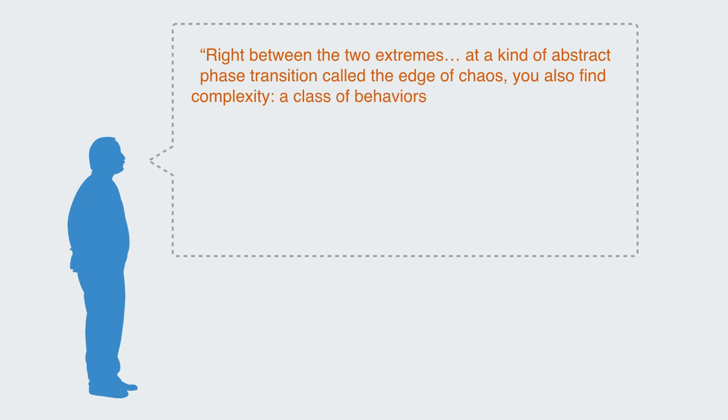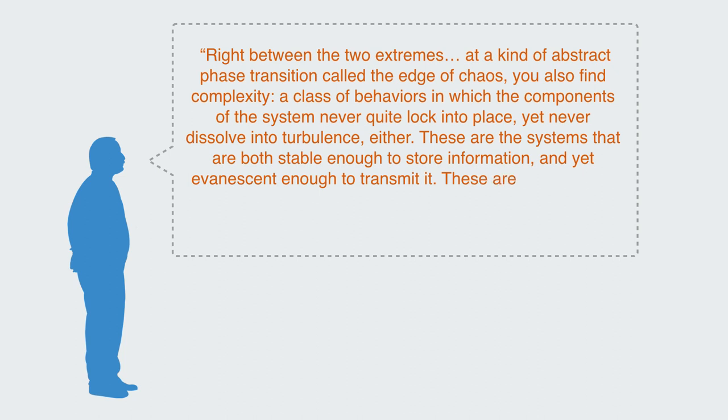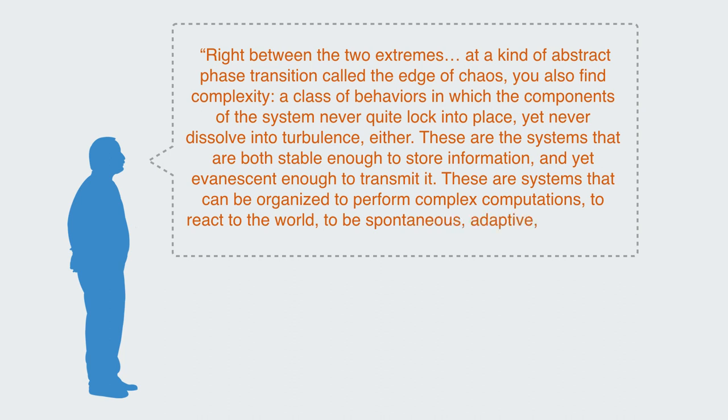You also find complexity, a class of behaviors in which the components of the system never quite lock into place yet never dissolve into turbulence either. These are the systems that are both stable enough to store information and yet evanescent enough to transmit it. These are systems that can be organized to perform complex computations, to react to the world, to be spontaneous, adaptive, and alive.